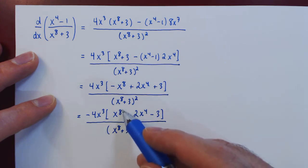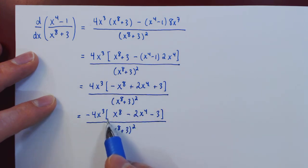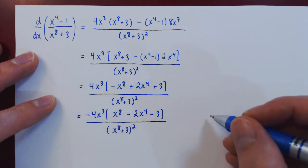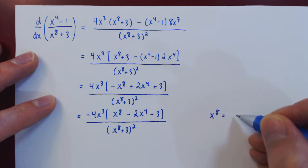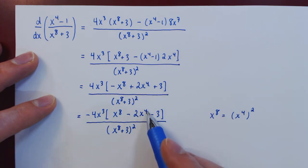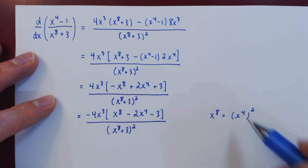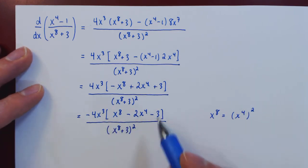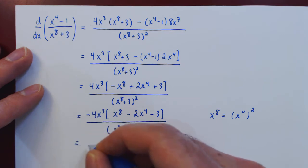And now since we have a degree 8 polynomial, this may seem like it's going to be difficult to factor, but we can make a simple but very useful observation. Notice that x to the 8 is simply the square of x to the 4. So we have a constant term, an x to the 4, and then an x to the 4 squared. So what we really have here is a quadratic polynomial in the variable x to the 4. So we can try and factor this using the product sum trick.